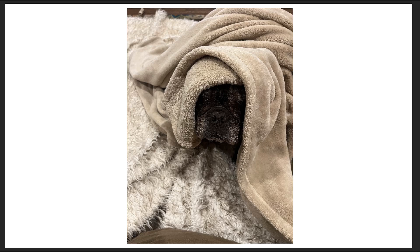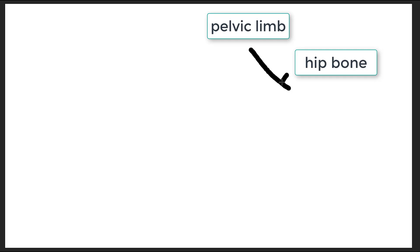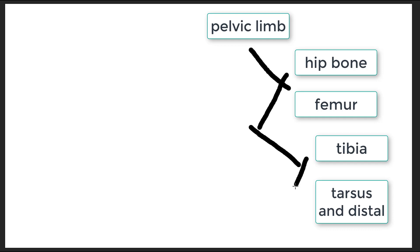Today we're going to draw and sketch in the muscles of the pelvic limb. To begin, we'll draw the skeleton, which includes the hip bone and the femur, with the short end of the femur projecting dorsal to the hip bone. Then we'll draw the tibia and fibula with the short end extending past the femur, followed by the tarsus and the digits.